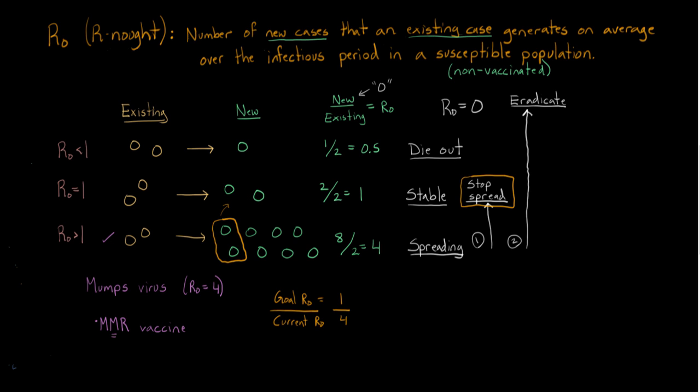You're able to protect this many people. And that basically is reflected as 1 minus 1 over 4. So 1 minus the goal R0 over current R0. This is the math way to represent this fraction. So this represents this fraction right here, and this represents this fraction right there.